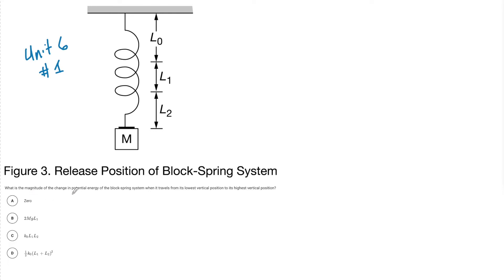What they're looking for is the magnitude and change of potential energy from the block spring system, from the lowest vertical position up to the highest vertical position. Now some of the things worth noting right away is that everything in this diagram is not drawn to scale. L0 is the natural length, L1 represents when they put the mass on it, so this was equilibrium.